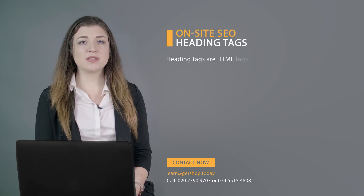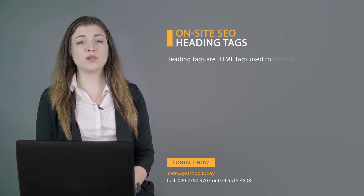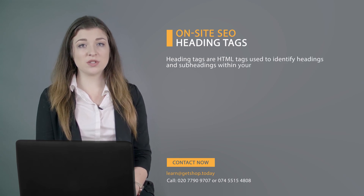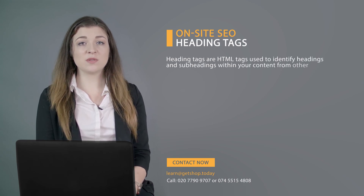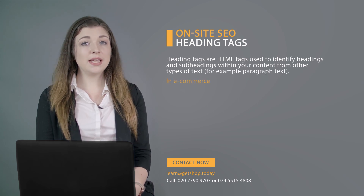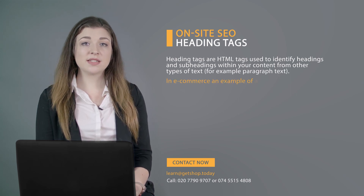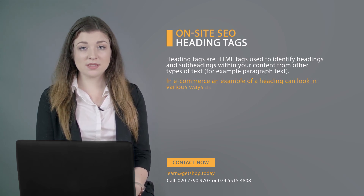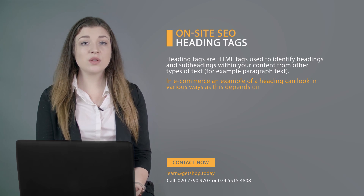Heading tags are HTML tags used to identify headings and subheadings within your content from other types of text, for example paragraph text. In e-commerce, an example of a heading can look in various ways, as this depends on the font and design choices.